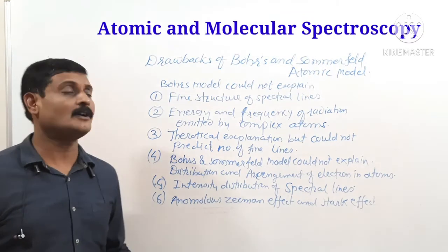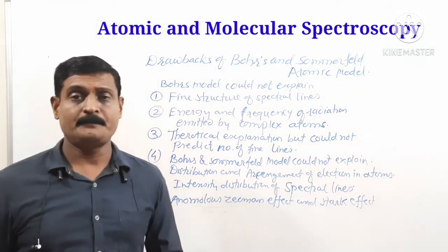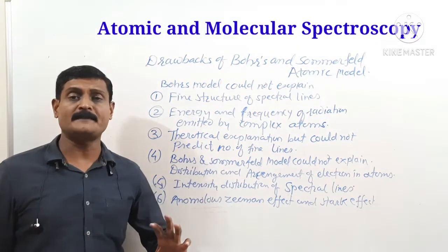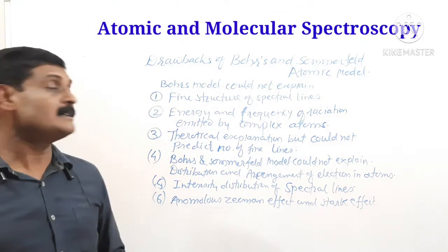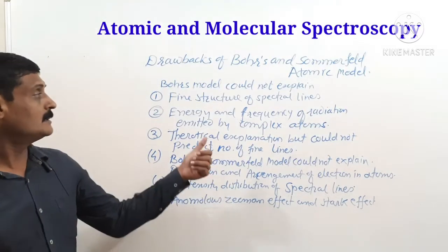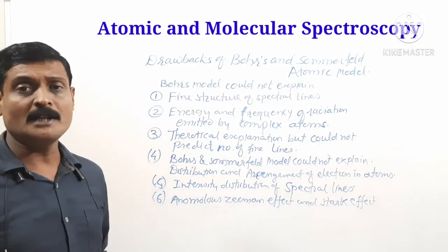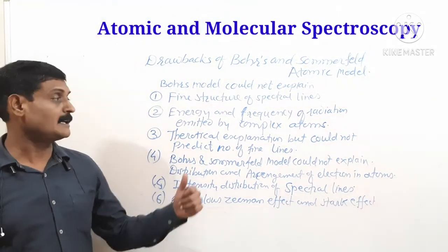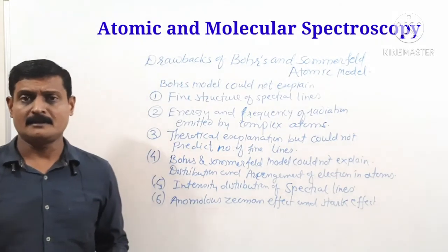The drawbacks of Bohr's and Sommerfield models are as follows. First, Bohr's model could not explain the fine structure of spectral lines, even for the simplest hydrogen atom. Second, Bohr's model could not calculate the energy and frequency of radiation emitted by complex atoms. Sommerfield's modification of Bohr's model gave a theoretical explanation of fine structure lines, but it could not predict the actual number of fine spectral lines.